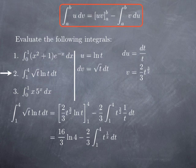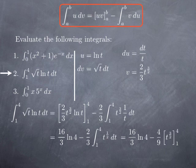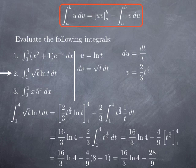To evaluate the remaining integral, we need an antiderivative of t^(1/2), which is (2/3)t^(3/2). So we obtain (16/3)ln(4) minus (2/3)·(2/3) = (4/9) times t^(3/2) evaluated between 1 and 4. Since 4^(3/2) = 8 and 1^(3/2) = 1, we get minus (4/9)·7 = −28/9. The final answer is (16/3)ln(4) − 28/9.